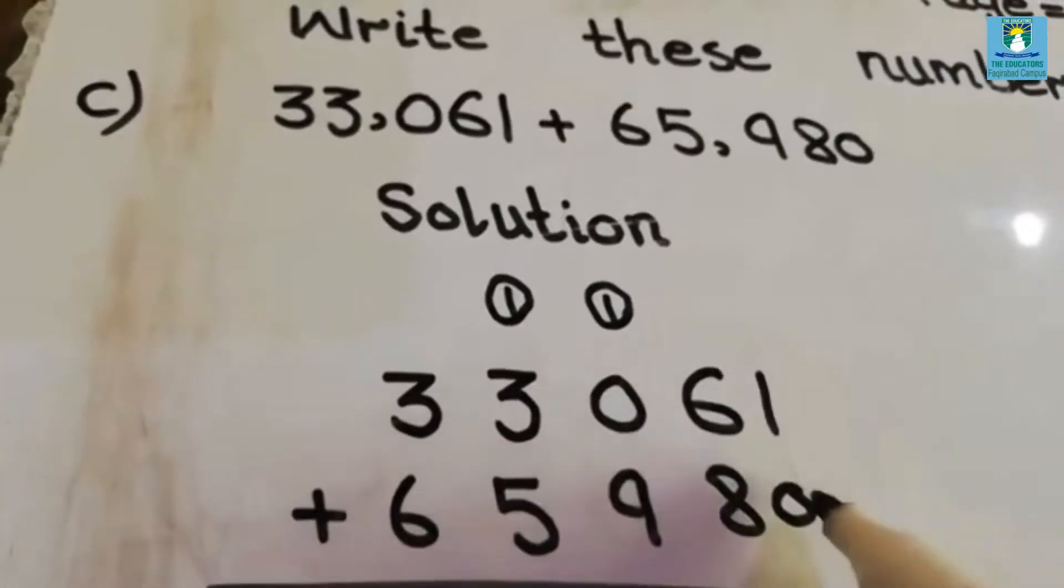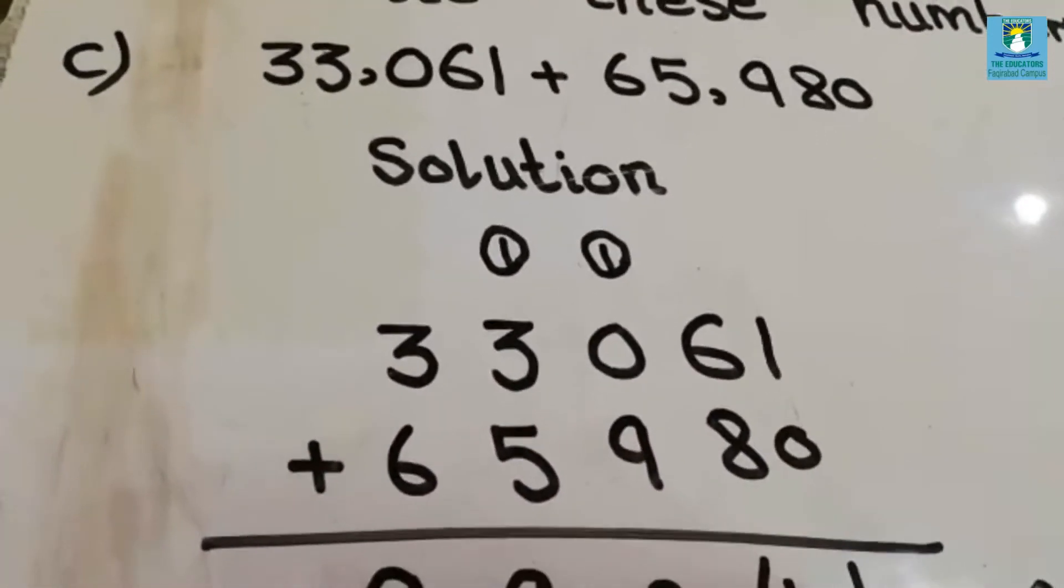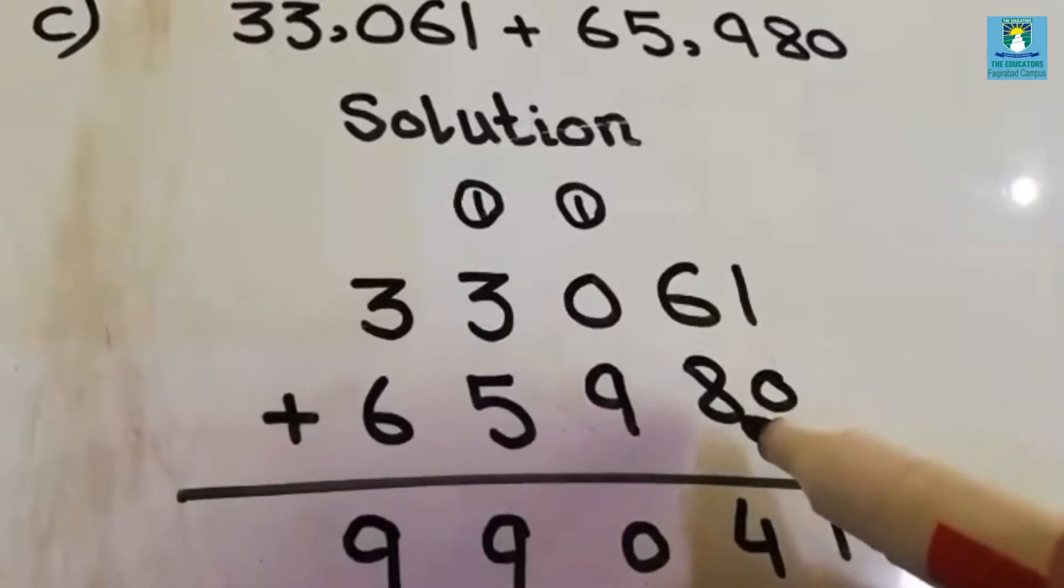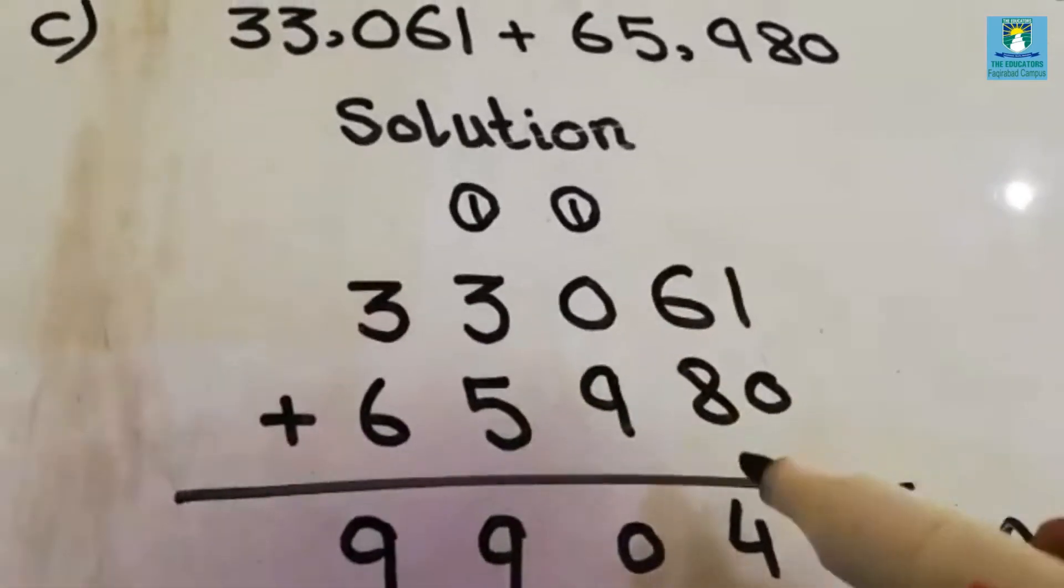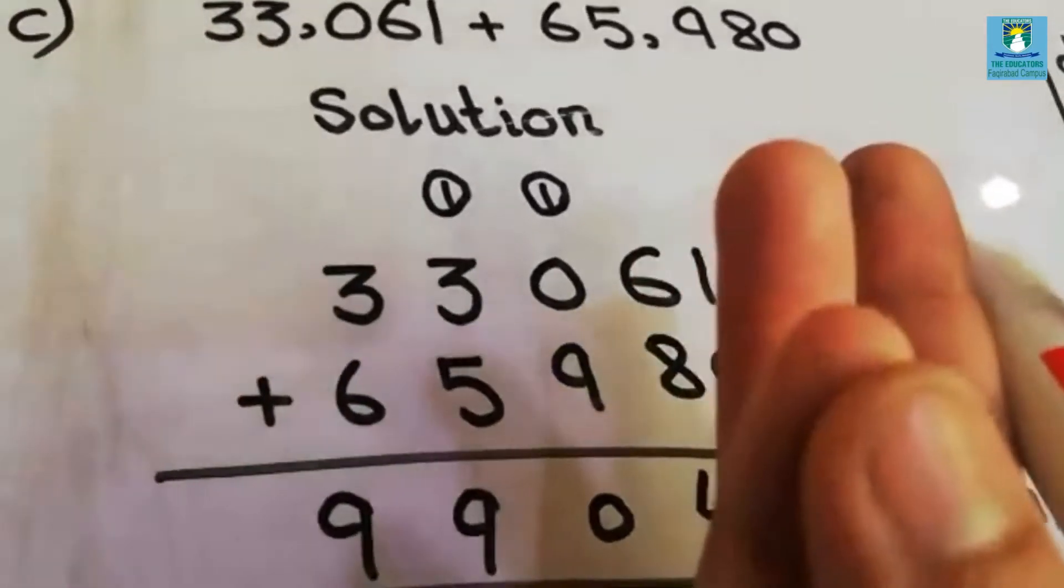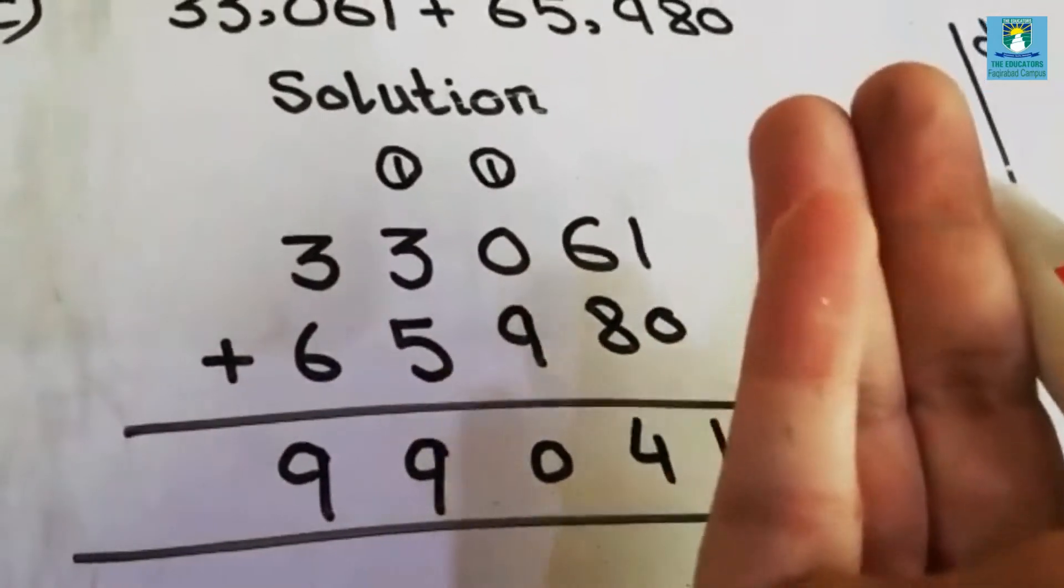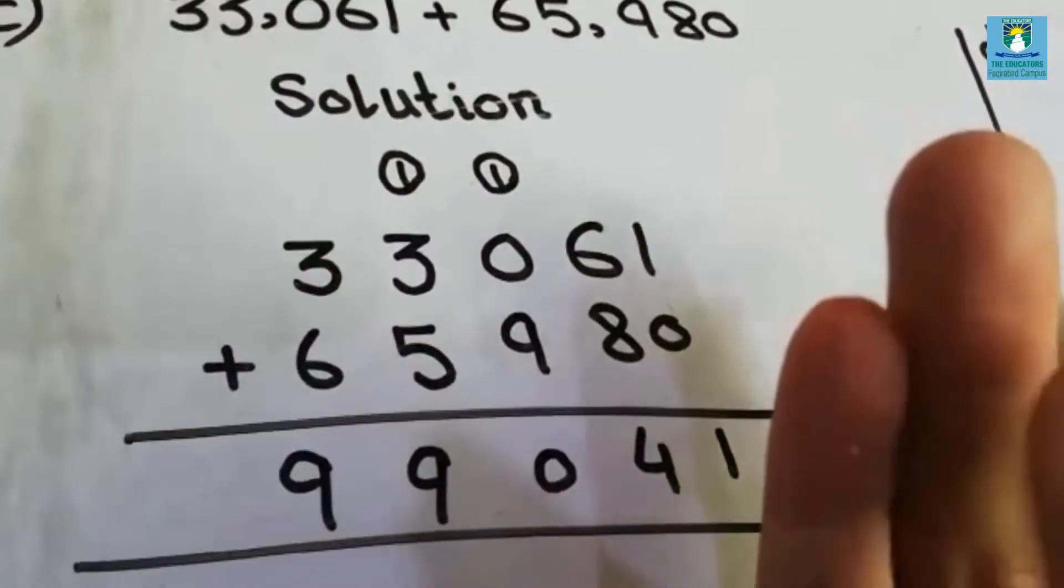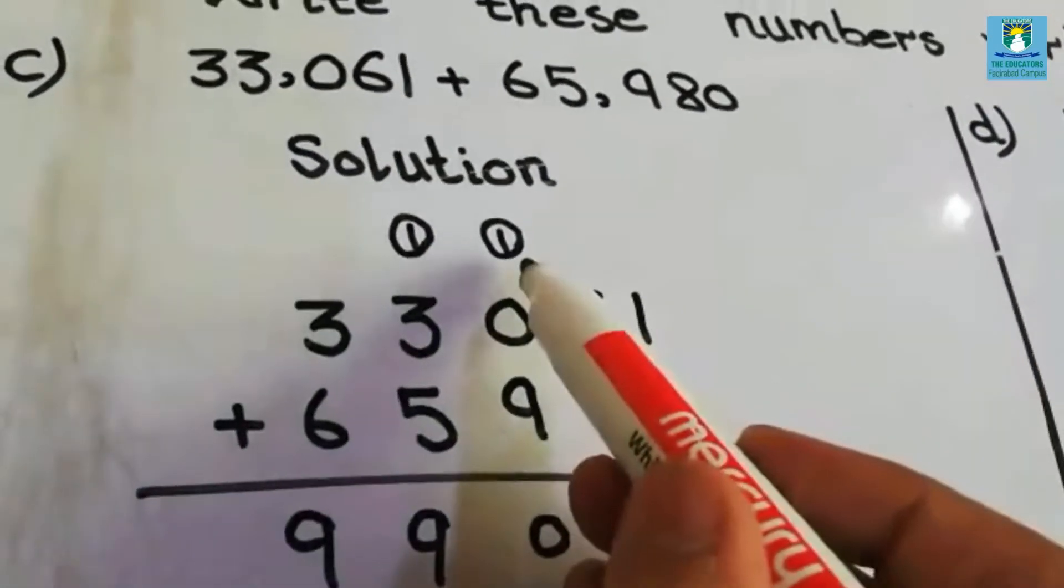Then we will add. 1 plus 0 is 1. 6 plus 8 is 14. 1 carry.